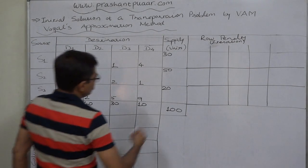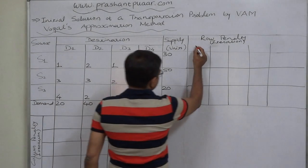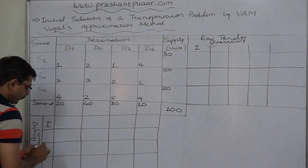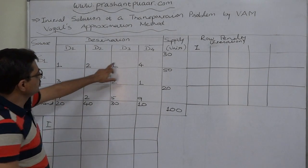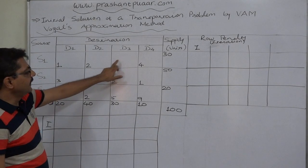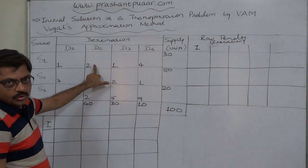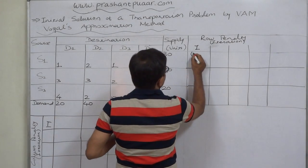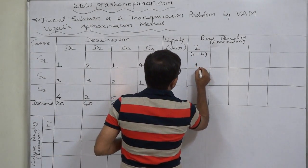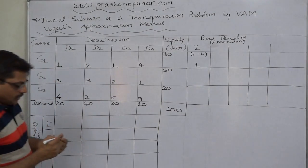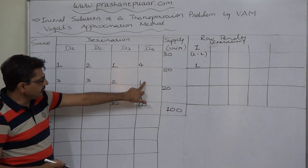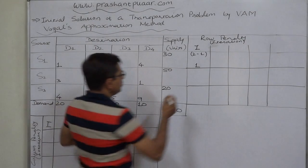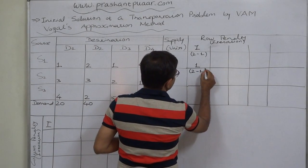Let us start the first iteration. For the first row, the least cost is 1 and the immediate higher is 2, so the penalty is 2 minus 1, that is 1. For the second row, the least cost is 1 and the immediate higher is 2, so the penalty is again 1.